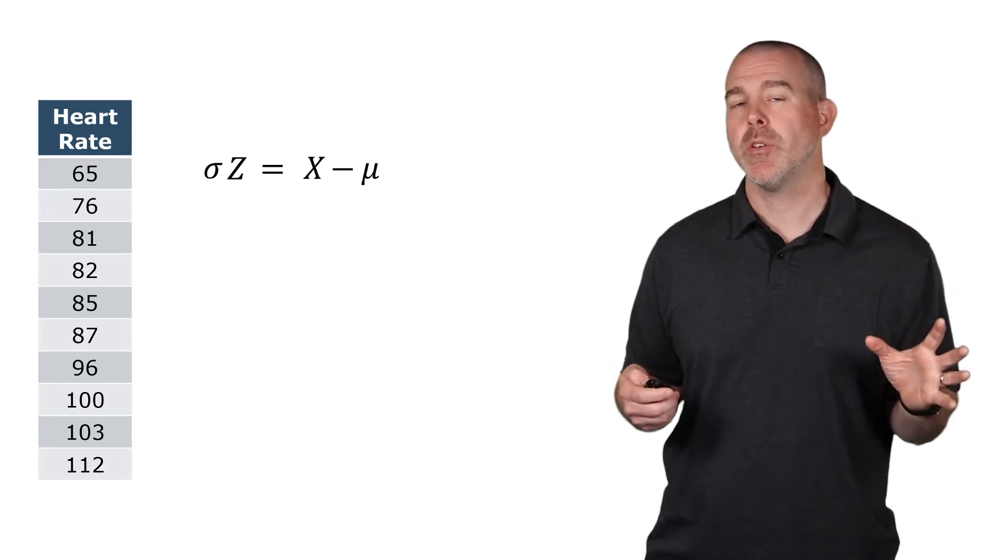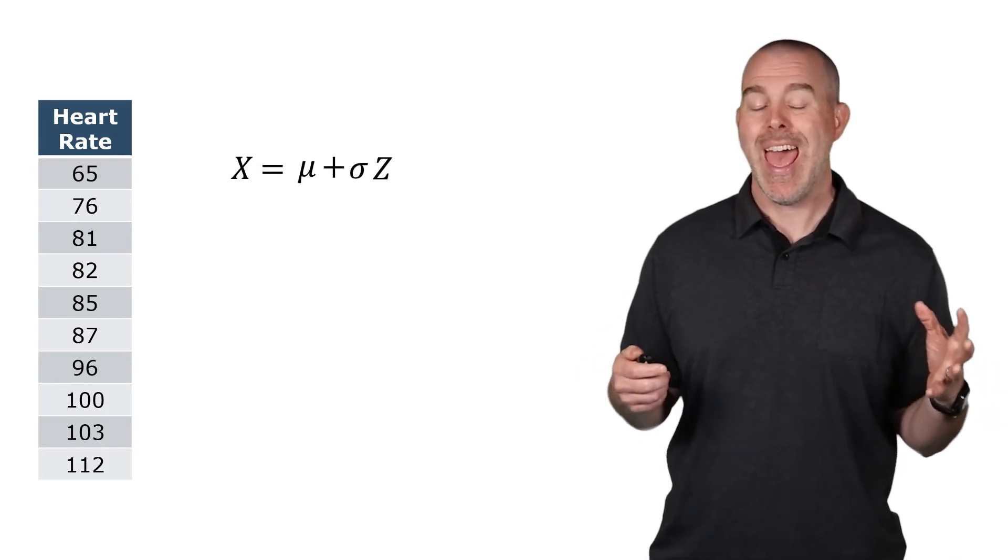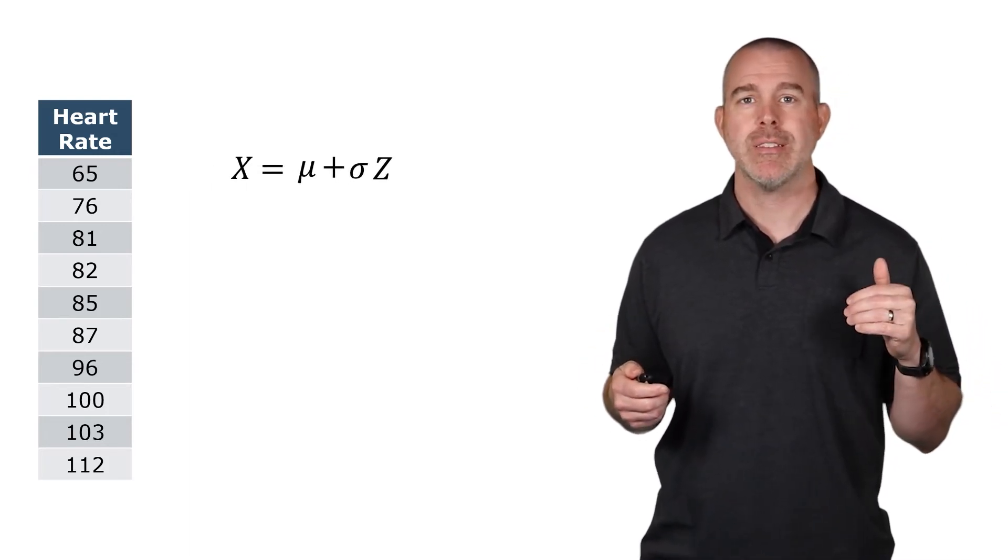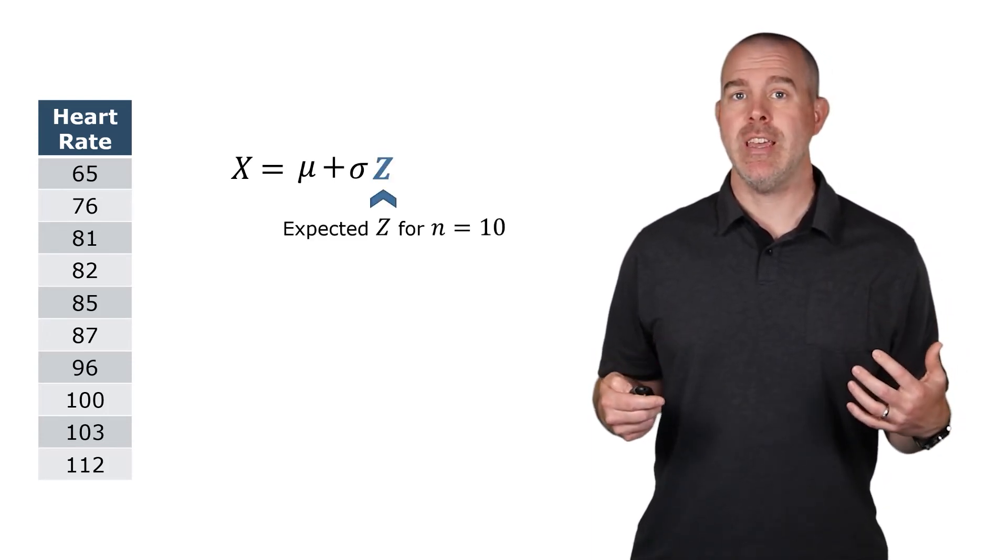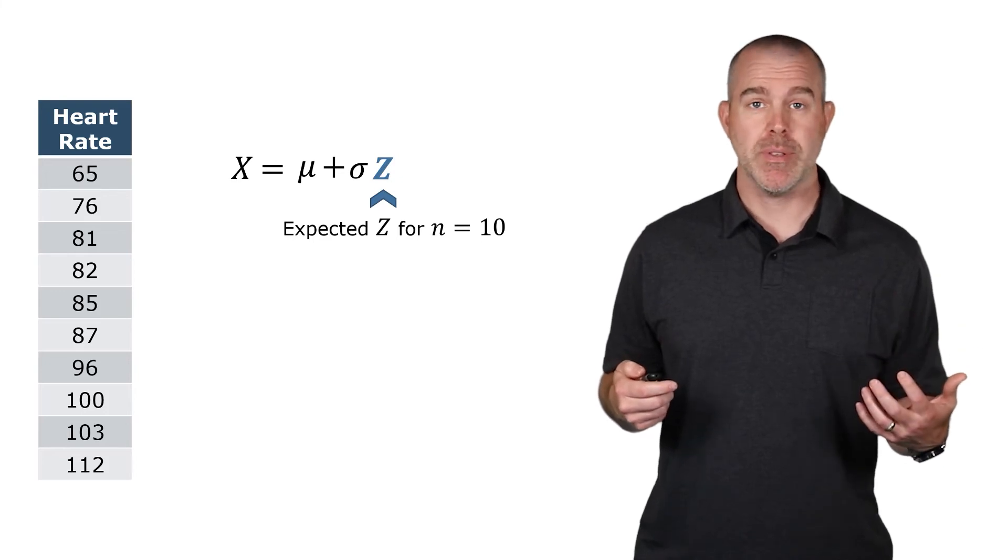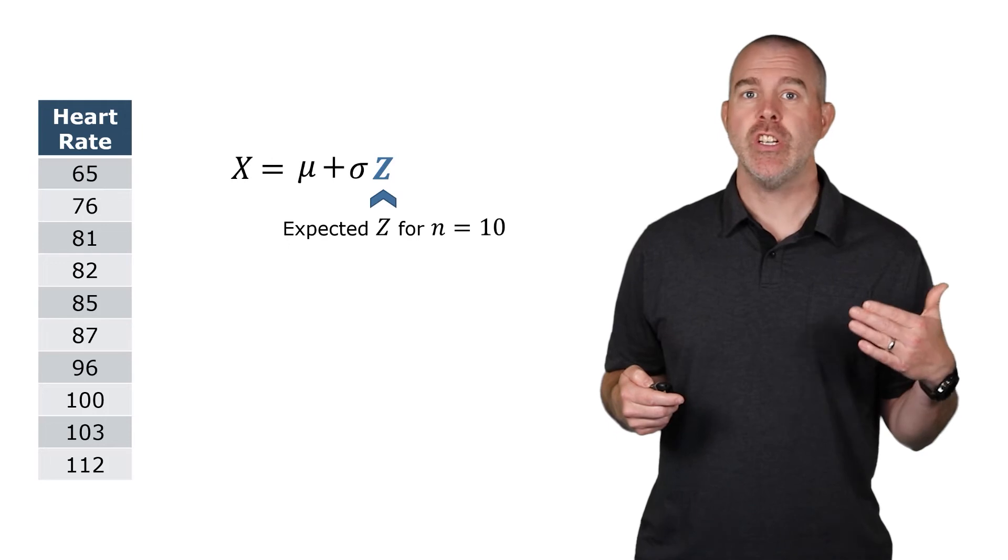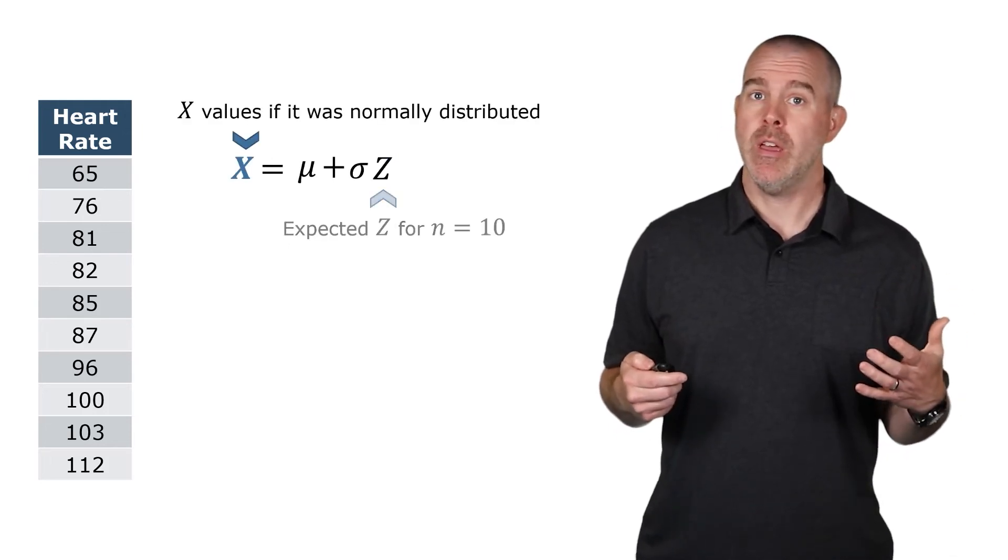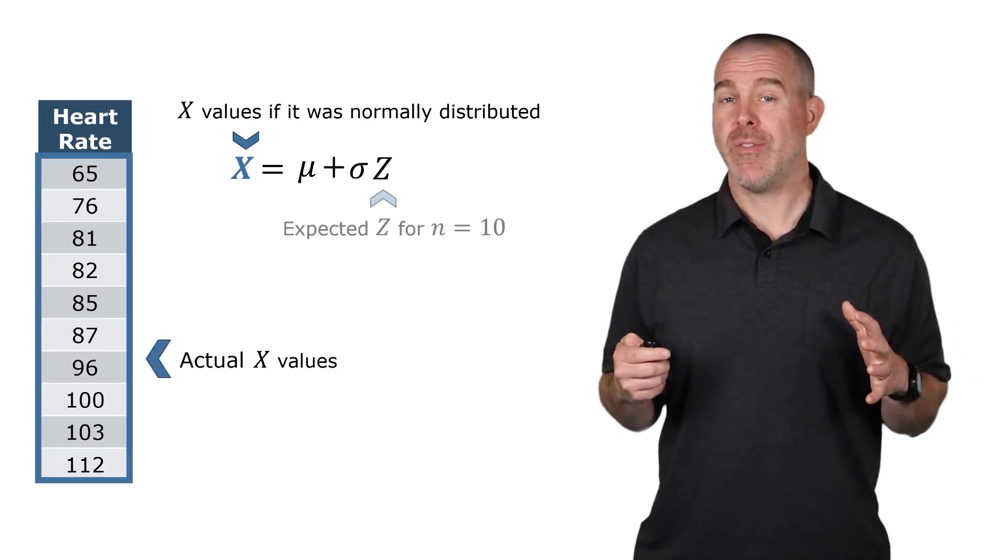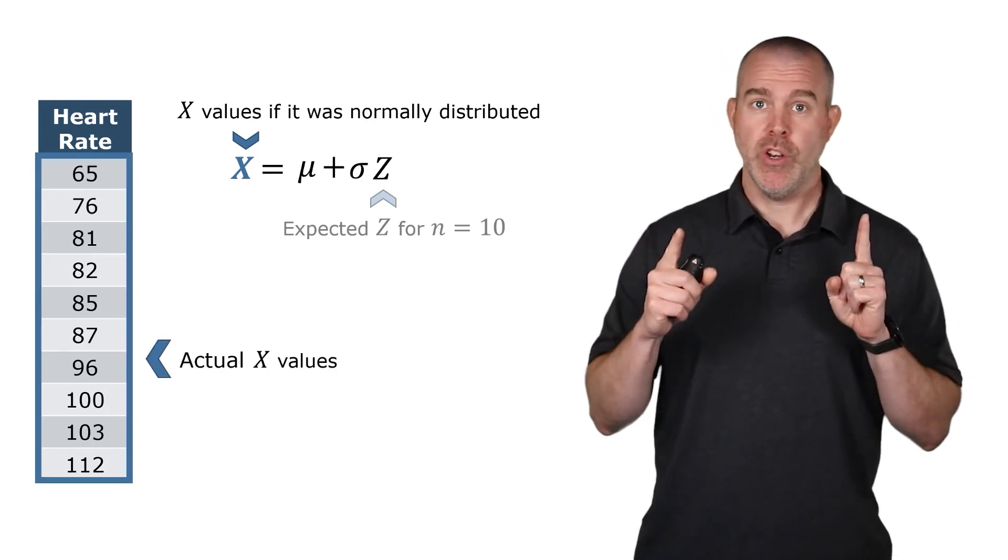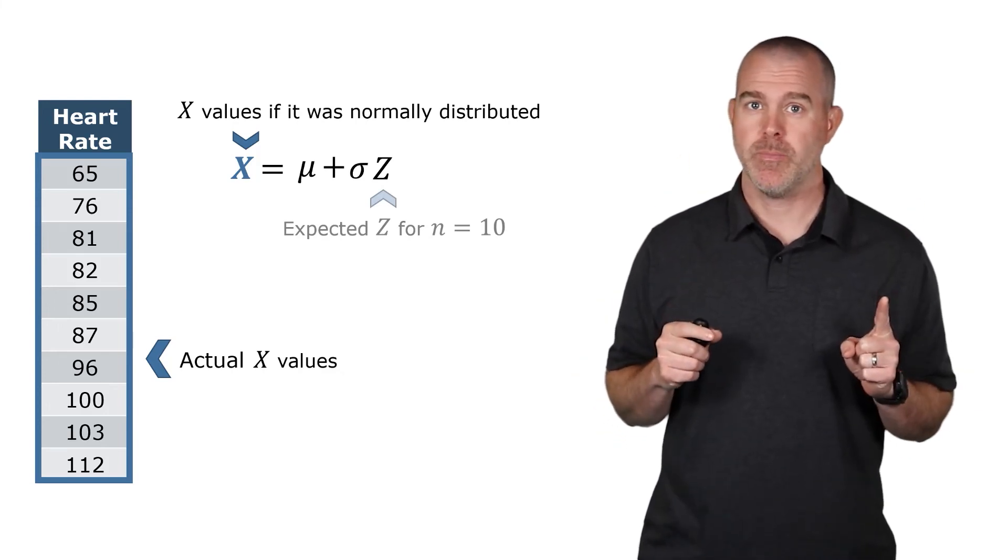If we do some algebra here, say we multiply both sides by sigma, add mu, and then just kind of reframe this, then x should be mu plus sigma z. Now this might not seem very helpful. What we're going to do though is treat the z as the expected z-score if we had a sample size of 10. So then when we multiply by the standard deviation and add the mean, we get what the x should be if the values were normally distributed. And then we have the actual x values to compare, and what we're going to do is focus on that relationship between the expected x values and the actual x values.